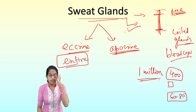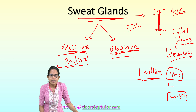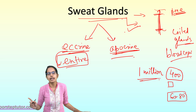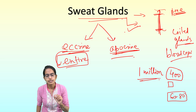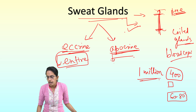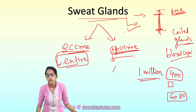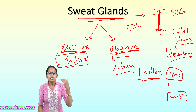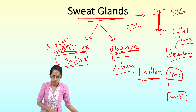To reiterate: eccrine sweat glands are present on the entire body, while apocrine sweat glands are present only on the axillary and genital parts. In the apocrine glands, hair follicles mix with sebum from the oil glands. The eccrine sweat glands, however, release only sweat.